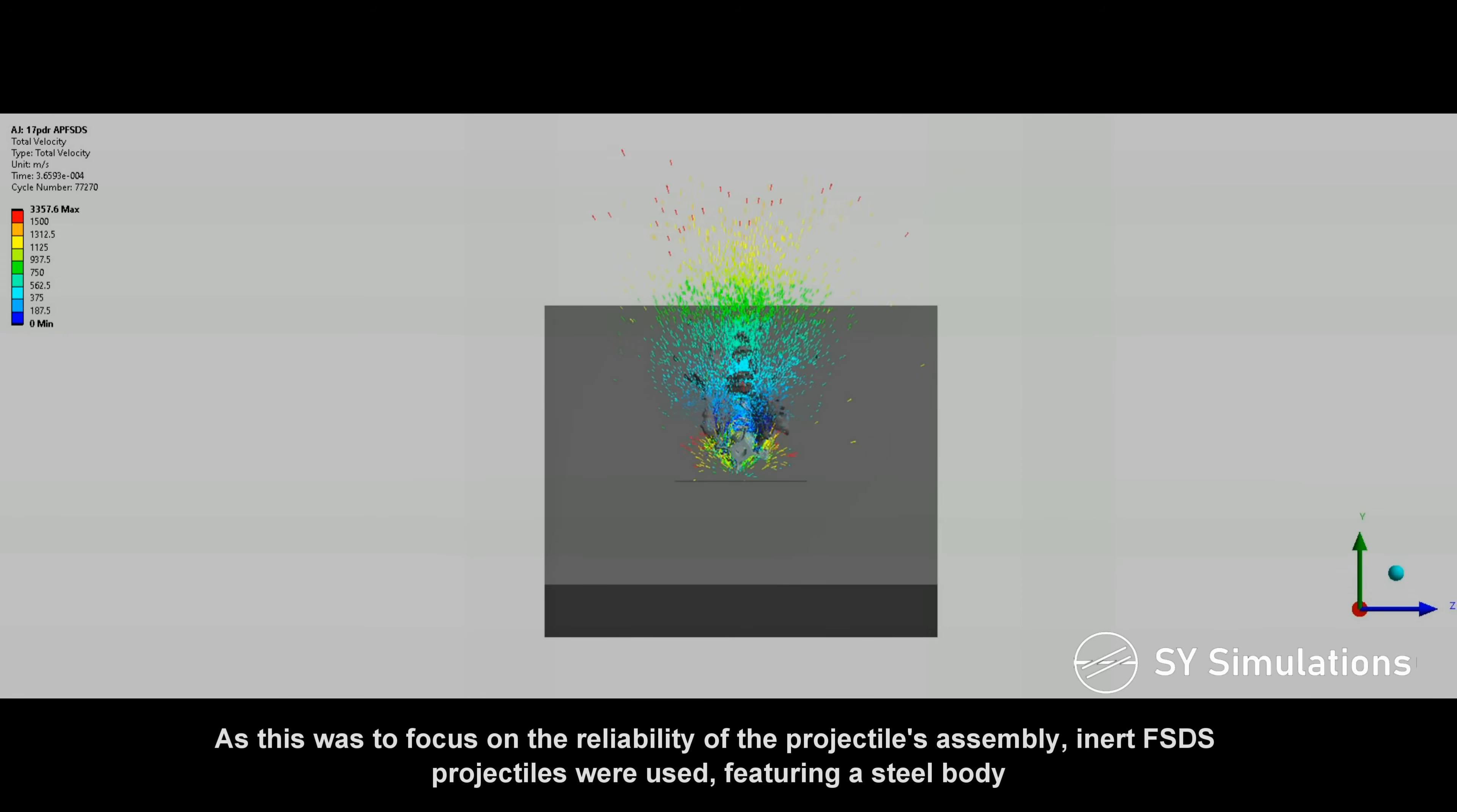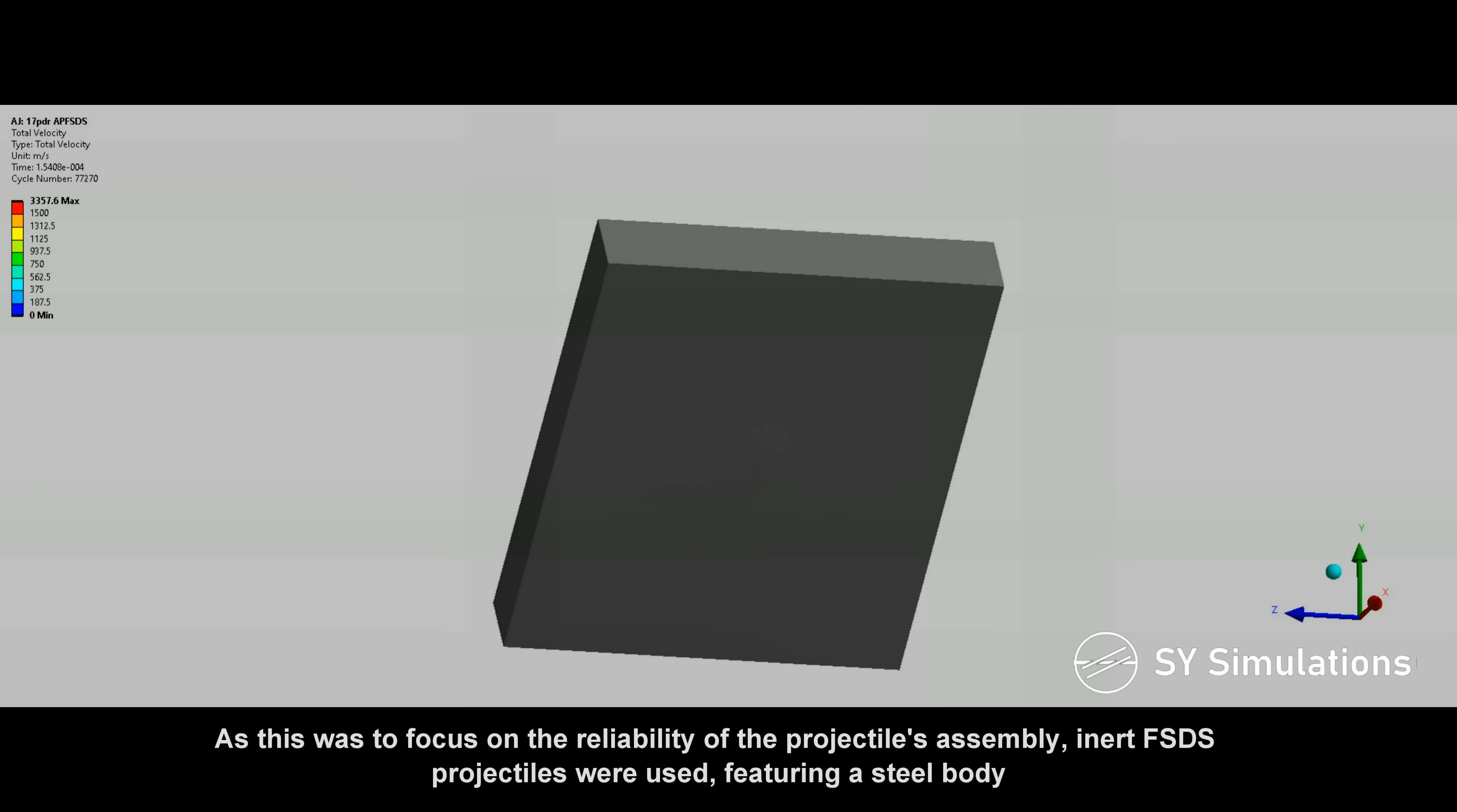As this was to focus on the reliability of the projectile's assembly, inert FSDS projectiles were used, featuring a steel body.